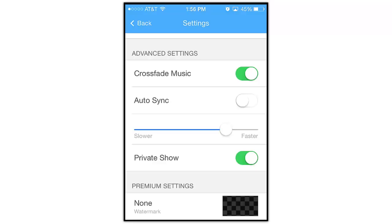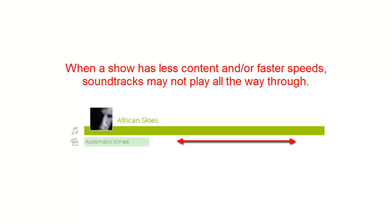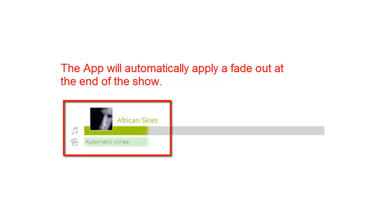When making a manual adjustment, there are two very important things to keep in mind. First, when the show is rebuilt, depending on which direction the slider is moved, the app may use different effects from the selected theme — this happens because the app knows that some effects work better than others at certain speeds. Also, as we speed up the show, we may run out of content before we run out of music. If that happens, the soundtrack will no longer play in its entirety. Instead, the app will simply apply a fade out to the soundtrack when it reaches the end of the show.